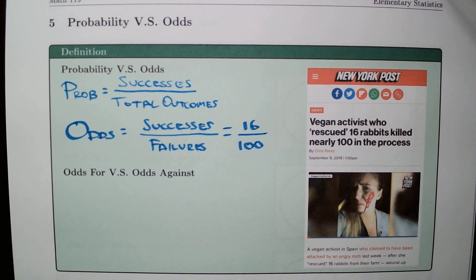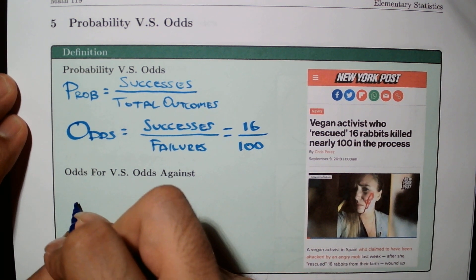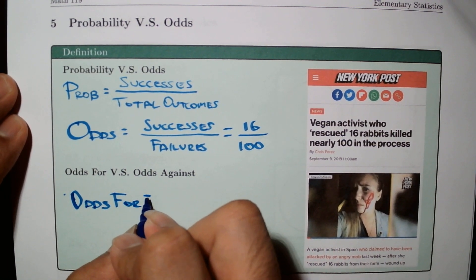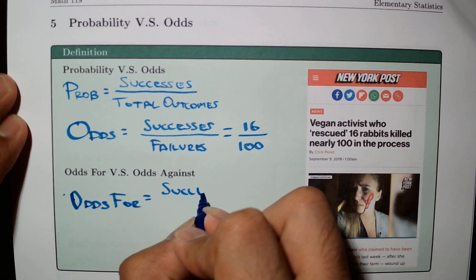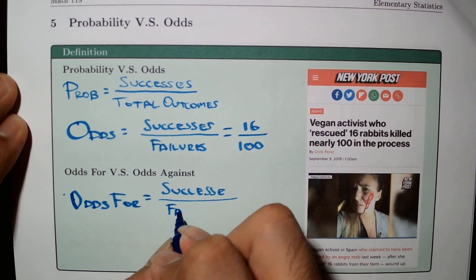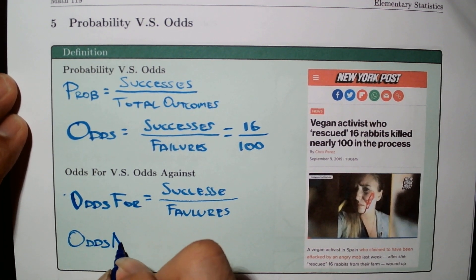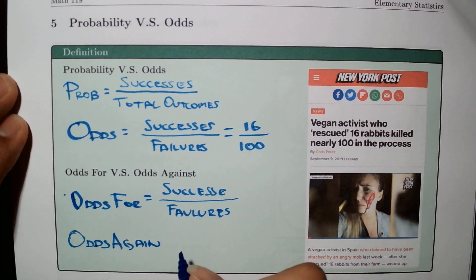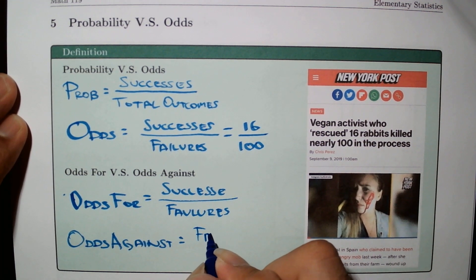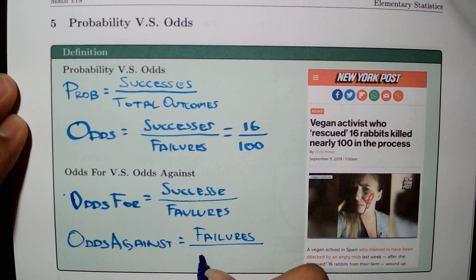Let me go a little bit more in depth about the concept of odds. Let's define odds for versus odds against. Odds for is the number of successes over the number of failures. Odds against is the reciprocal — the number of failures divided by the number of successes.